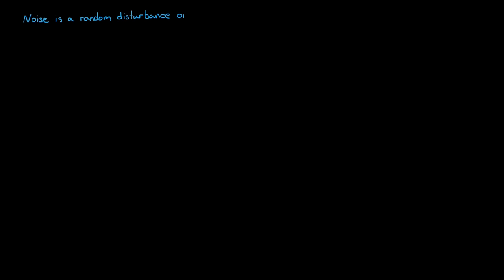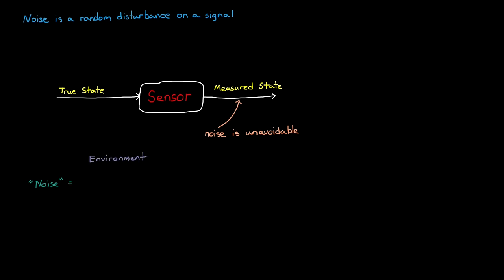Noise is a random disturbance on a signal, and when you're dealing with sensors, both mechanical and electronic sensors, it is unavoidable. The generic term noise refers to the summation of different noises created from different sources that stem from things like the environment it's operating in, which is both naturally occurring noise and man-made noise, the specific implementation of the electronics, and from manufacturing defects.